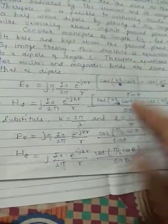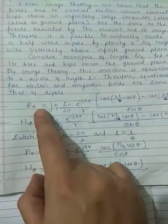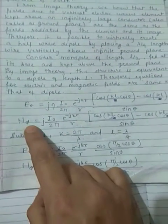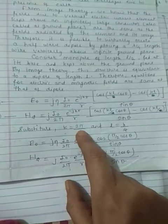Now we have already seen dipole equations for dipole. Since monopole is a special case of dipole, equations for E theta and H phi will be the same as that of dipole.